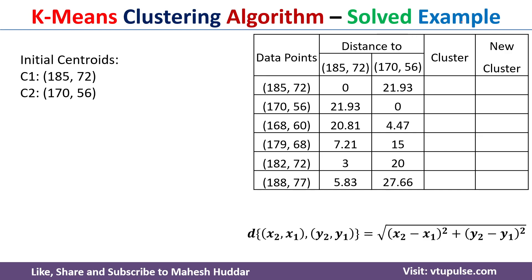Once we calculate the distances from the data points to the initial centroids, we assign each data point to a cluster based on the minimum distance. The distance from the first data point to C1 is 0, and to C2 is 21.93. Since 0 is the minimum, the first data point is assigned to C1. The distance from the second data point to C1 is 21.93 and to C2 is 0, so it is assigned to C2. Similarly, all remaining data points are assigned to either C1 or C2 based on their minimum distances.